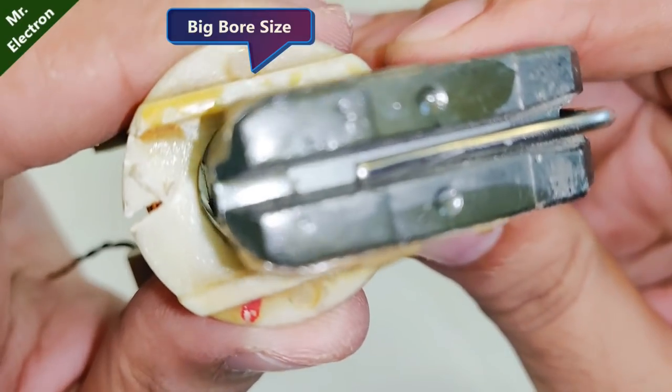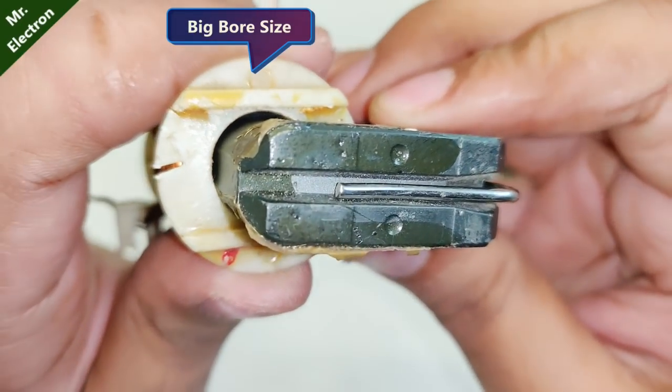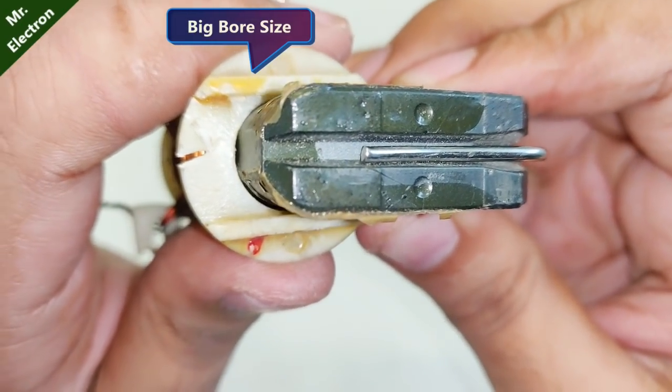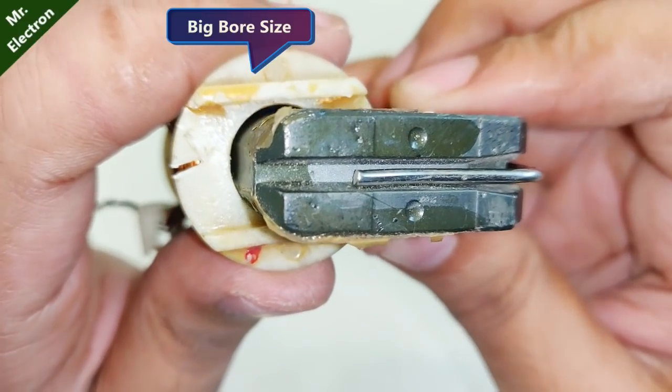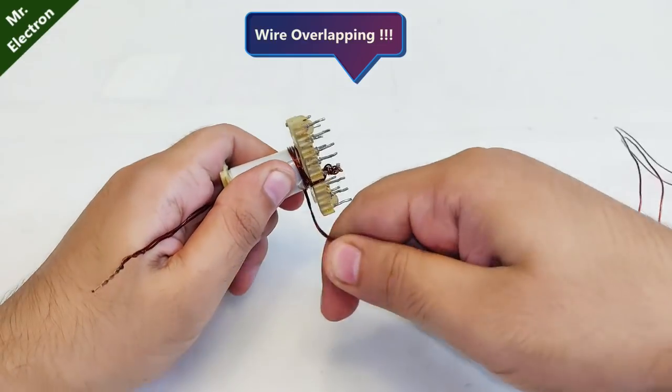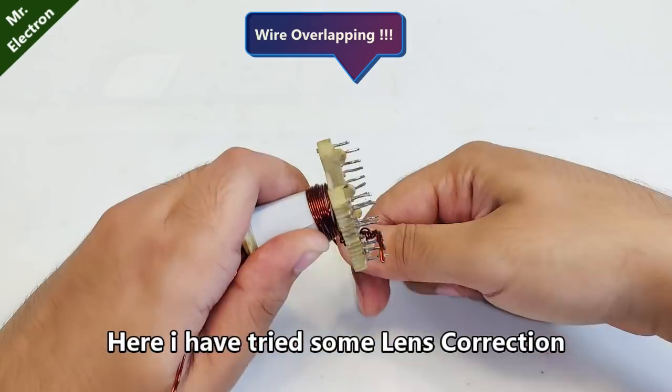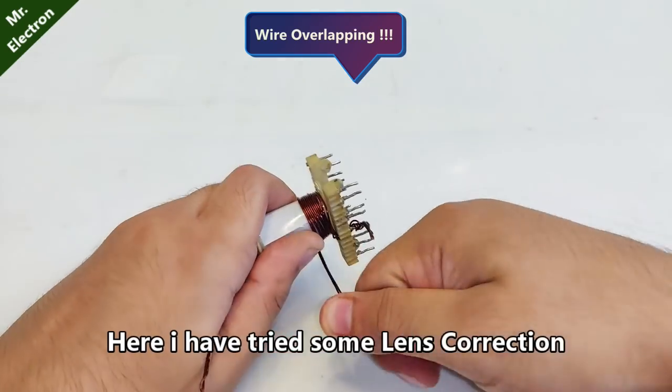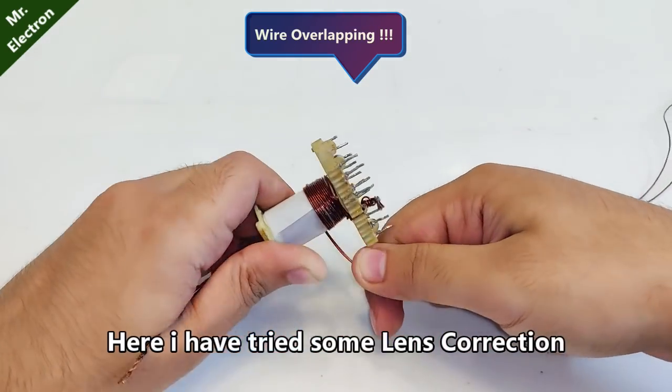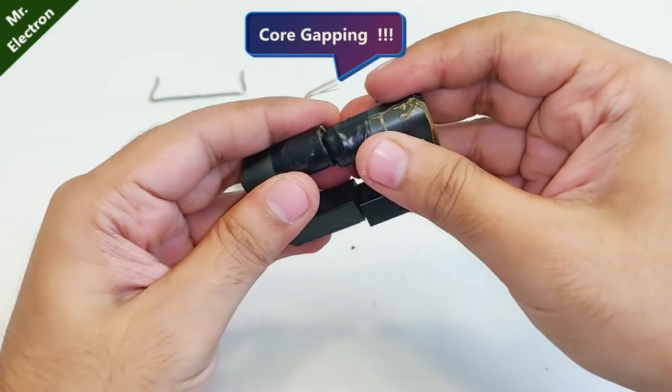The first flaw is that the core thickness is smaller than the bore size of the plastic holding the windings. The second one is the overlapping of the winding wires one over the other at certain points, which can also reduce the efficiency. The third one, I'm not sure if it's actually a flaw, is the air gap between the two cores.